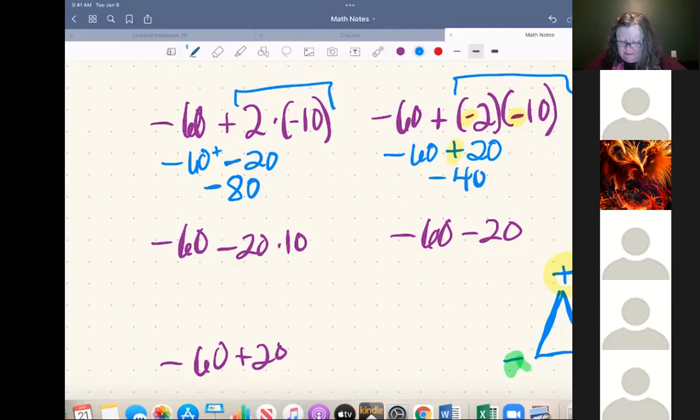That means this is negative 40. The third problem, we have negative 60 minus 20 times 10. That means it's got to be negative 60 brought down, negative 20 times 10.